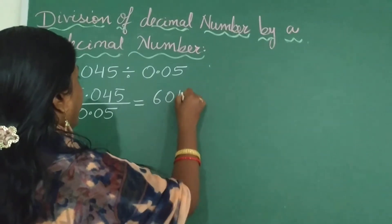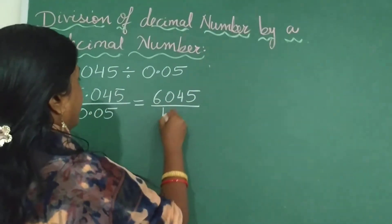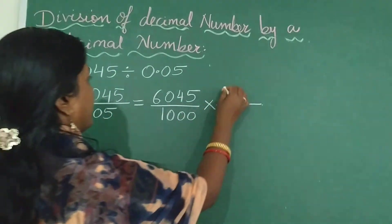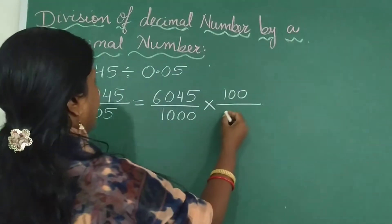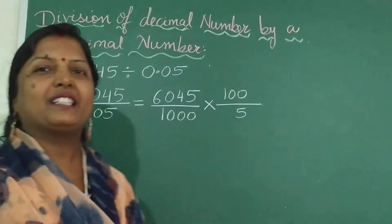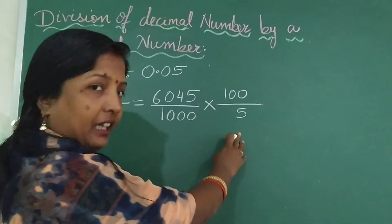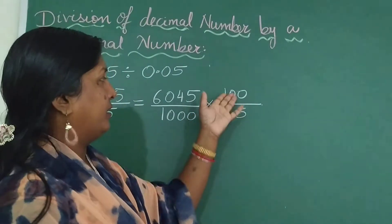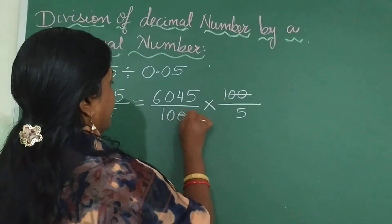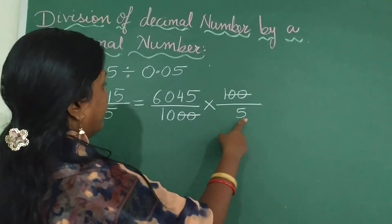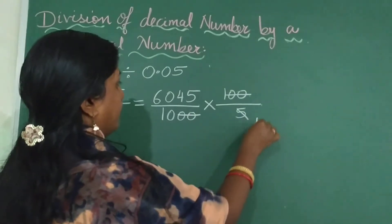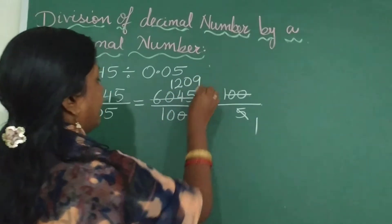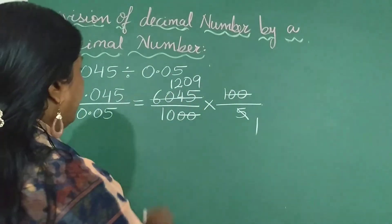So you get 6045 over 1000 divided by a fraction with 3 zeros. Division means you can directly go for multiplication — the fraction gets reciprocated. So I just skipped that reciprocation step. Now you can see 2 zeros here — you cancel them. So you have 1 zero and a 5. You can go for the cancellation method. 5 ones are 5, 5 twos are 10, 5 nines are 45. So you get 1209 as the numerator.